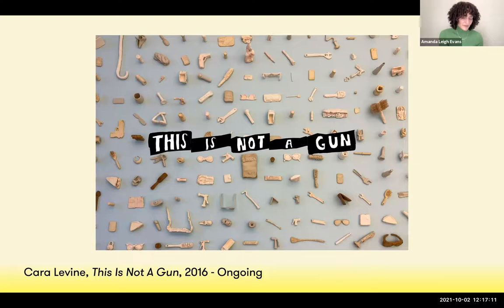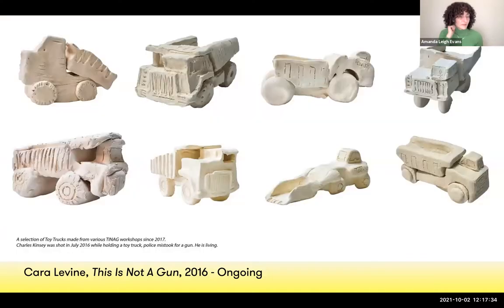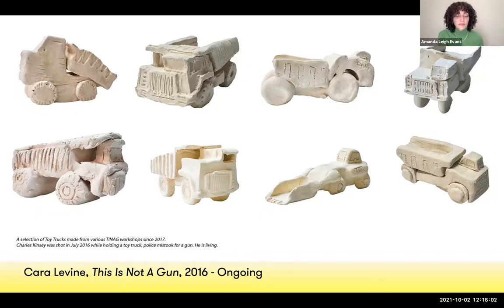Kara Levine's This Is Not a Gun is an ongoing project exploring police brutality and the objects innocent victims were holding at the moment they were shot by police. The artist noticed that officers had mistakenly believed the victim was holding a gun — a sandwich is not a gun, a hairbrush is not a gun, a wallet is not a gun. Since the year 2000, U.S. police have mistaken at least 38 distinct objects as guns during shootings of majority young Black American men; none of the victims in this series were armed. This Is Not a Gun engages the public through community-driven workshops, where participants shape these mistaken-as-gun objects in clay, giving presence to the human rights violations and the racism prevalent in America today.